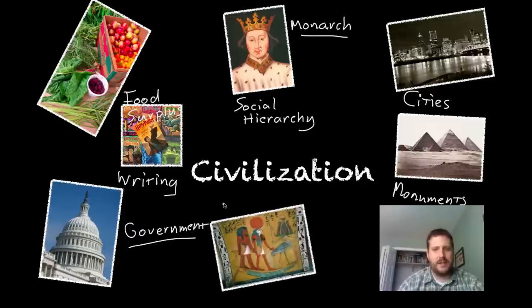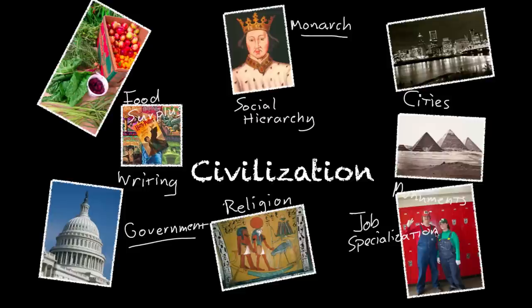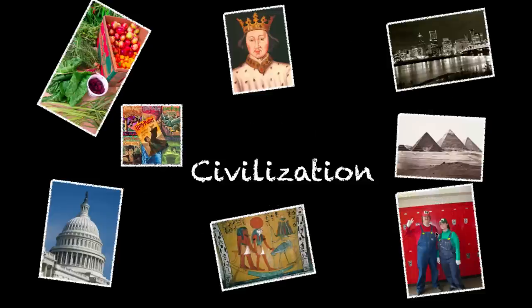You've got religion or a shared value system. And you've got specialization — job specialization. You've got people who can be plumbers because they no longer have to grow their own food. So civilization has these aspects to it. When you have really complex societies, you're no longer focusing most of your attention on gathering and hunting food, and because of that, all these different things start to develop. But let's take a minute to focus on that last one — job specialization.